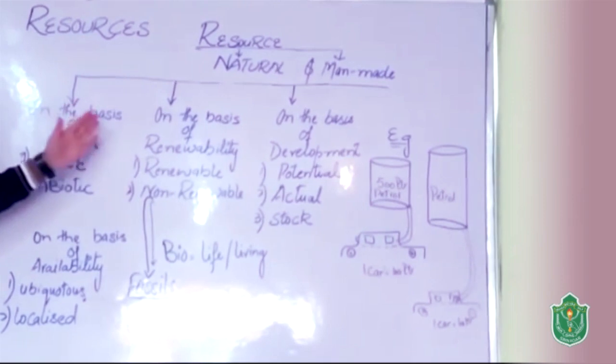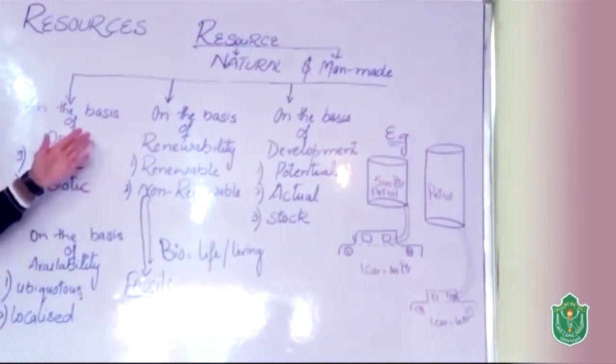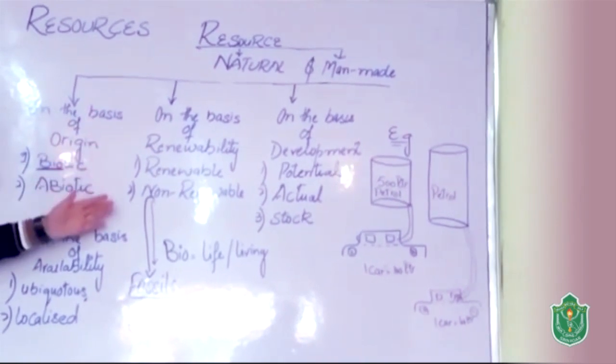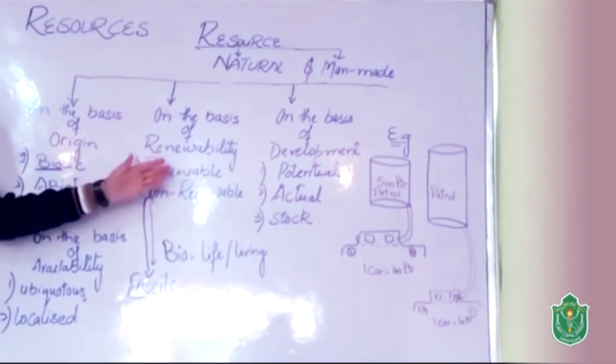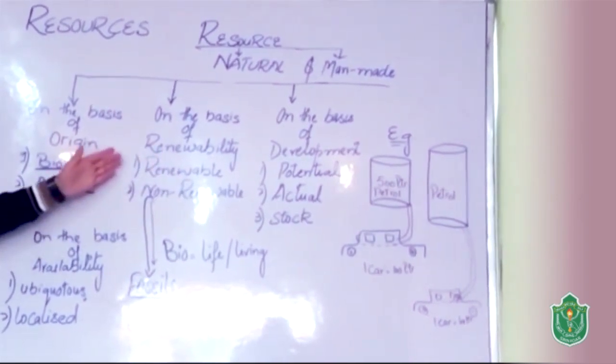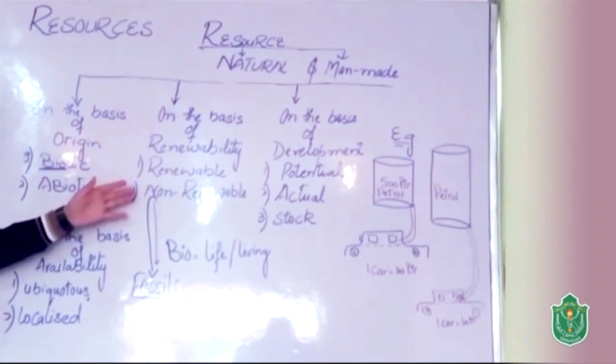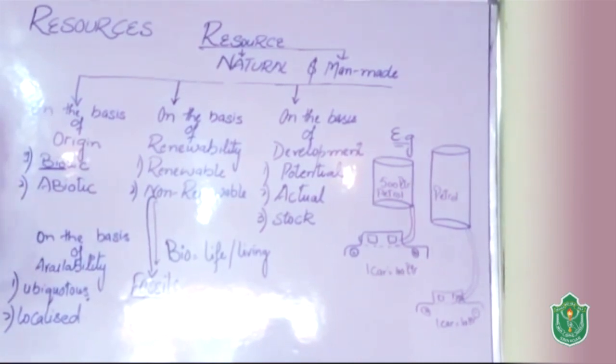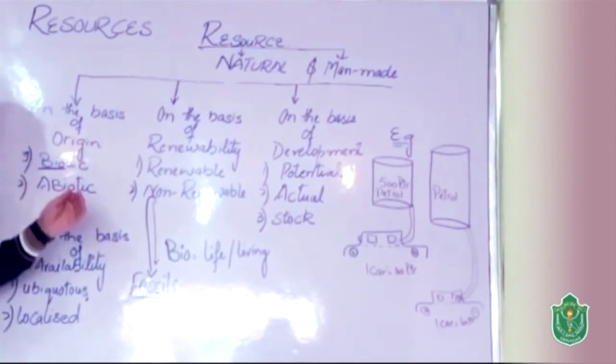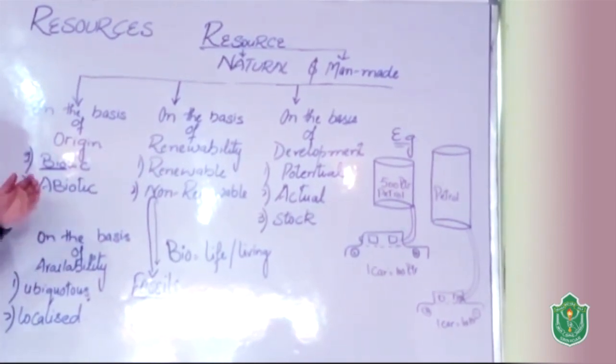Now the second step, on the basis of renewability. There are two further types. One is renewable and second one is non-renewable. Renewable resources are those resources which we can use again and again without getting exhausted like solar energy, wind energy, geothermal energy.